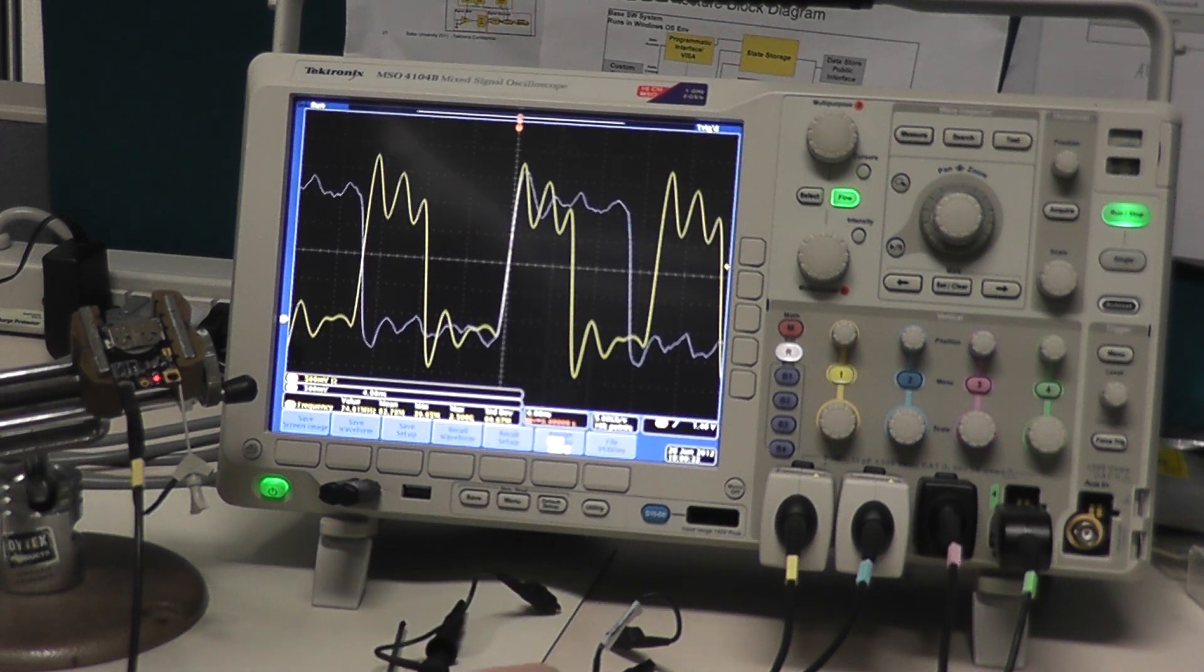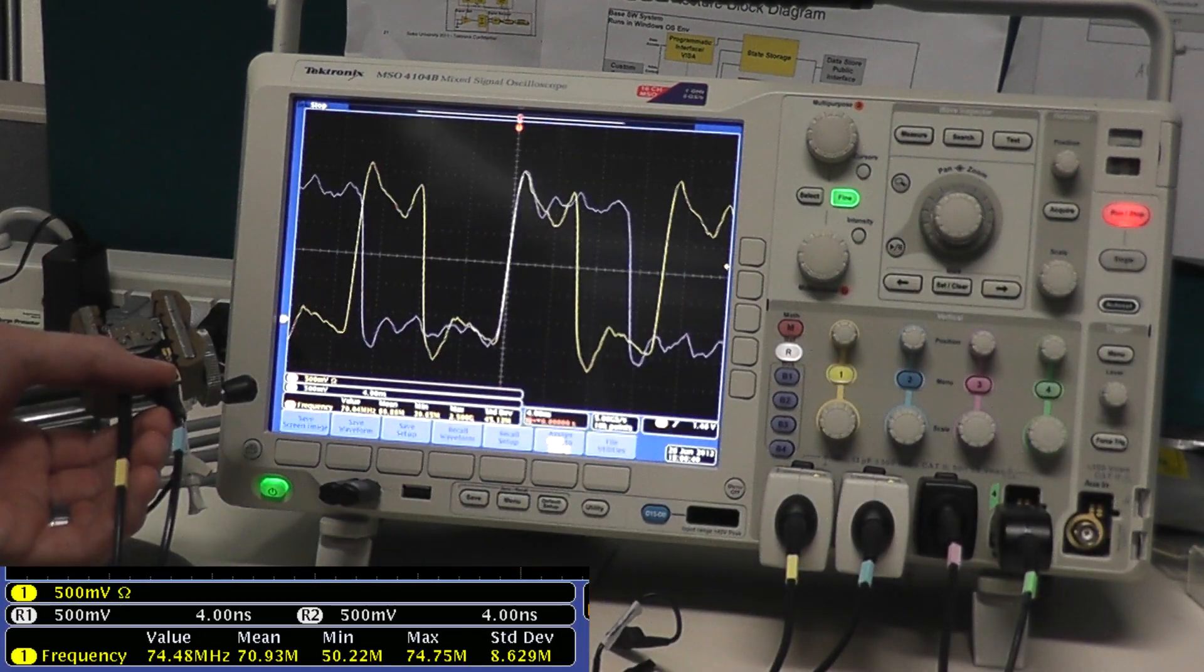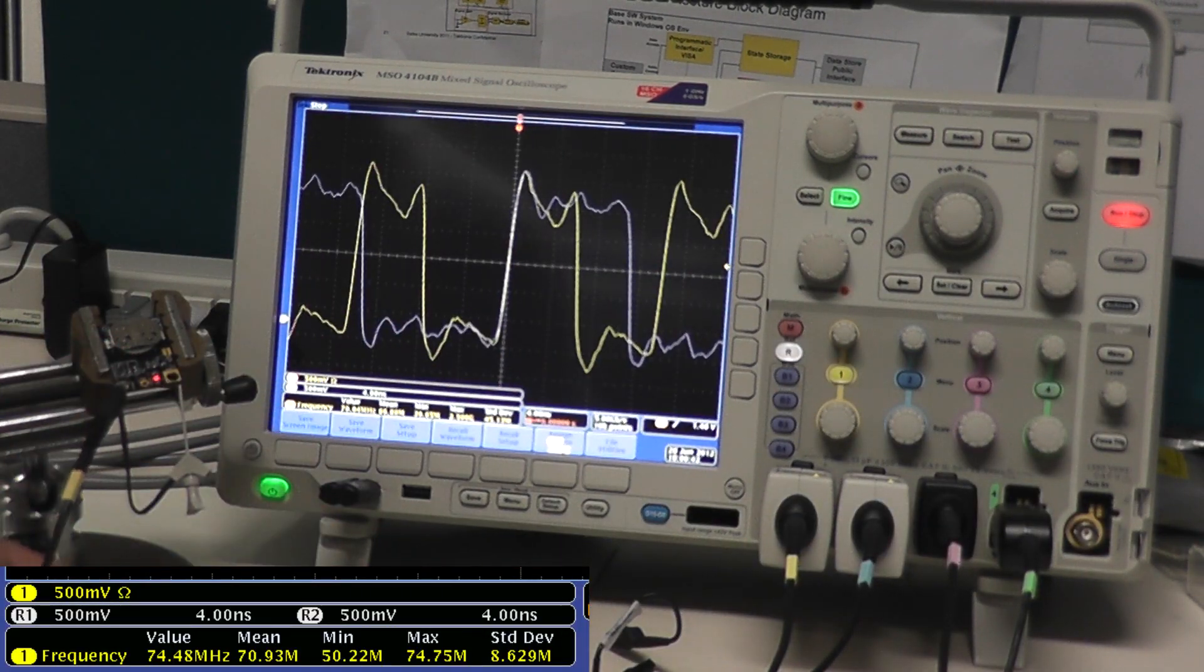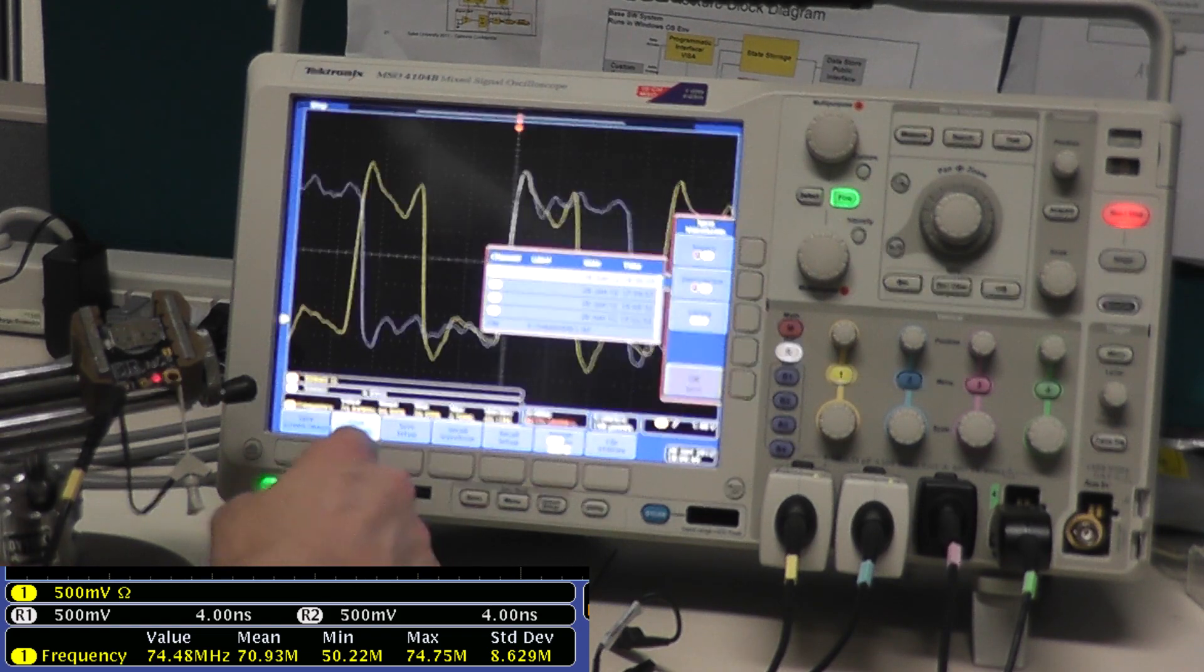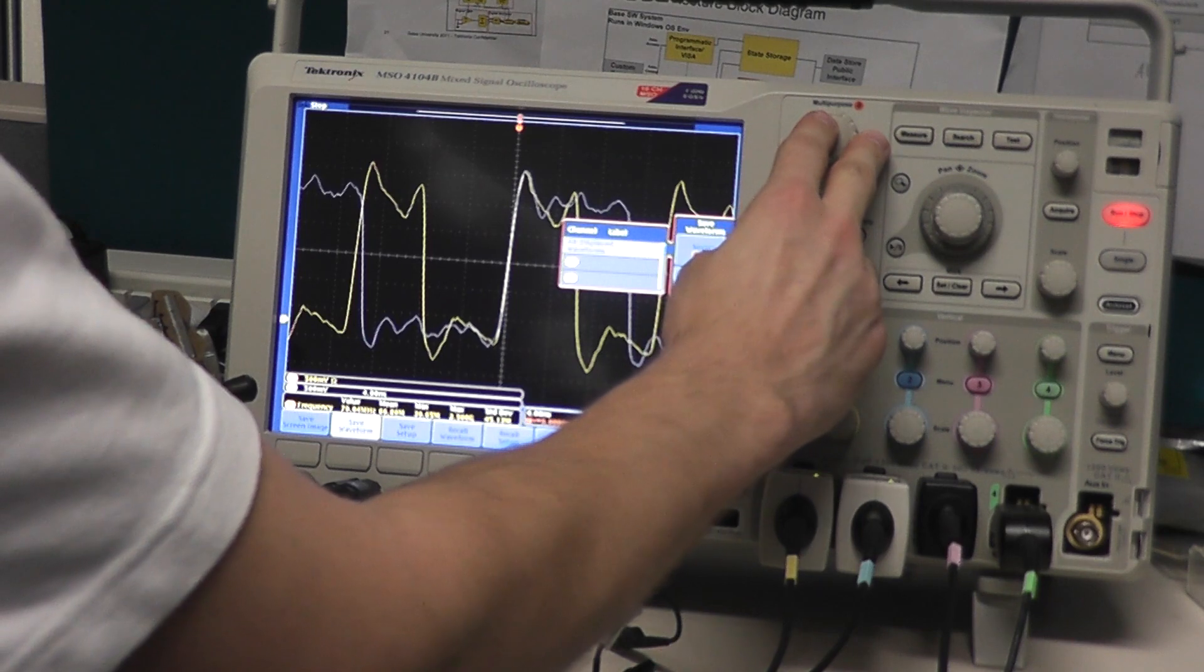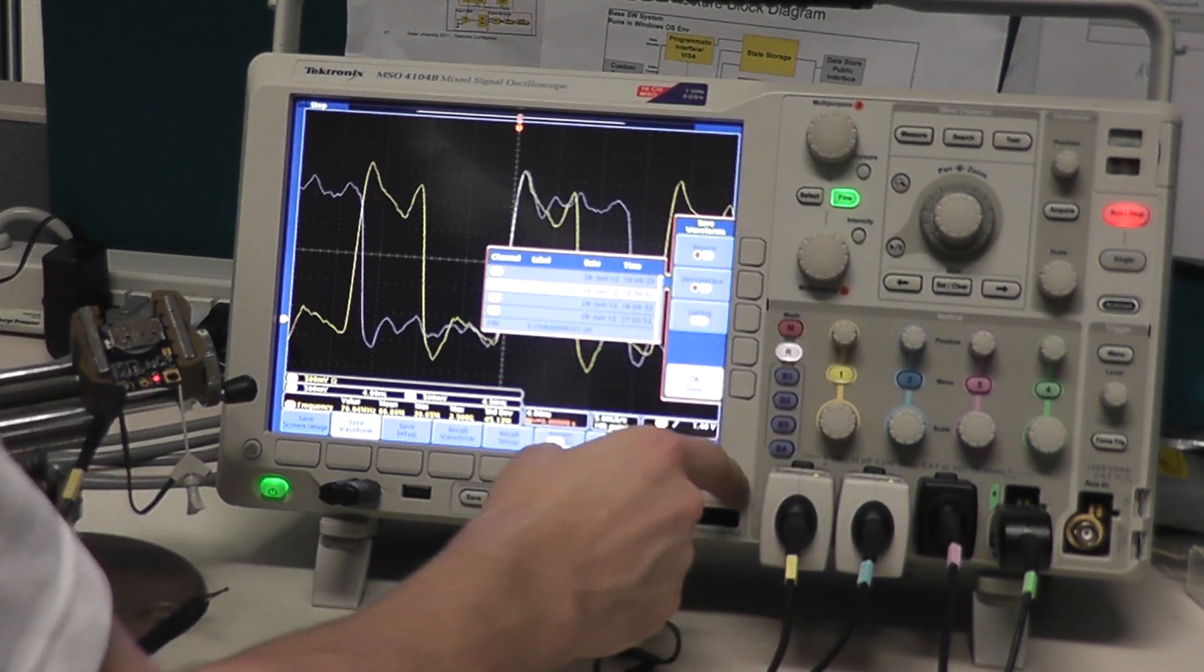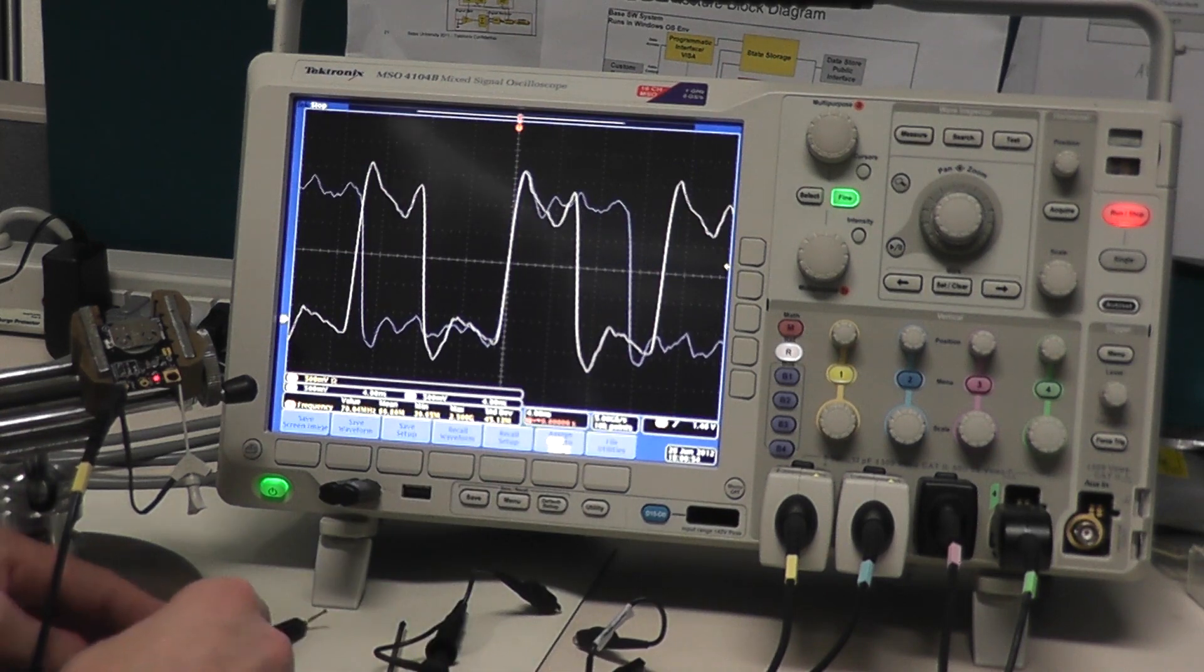Next I'm going to take a Tektronix active probe that has 0.8 picofarads and apply this to my circuit. As you can see with low capacitance I'm not getting much loading effect. I'm measuring about 74 megahertz. This is very normal for an active probe and why they're very special. I'm going to save it as a reference waveform too and we're going to be able to compare it with the last probe.